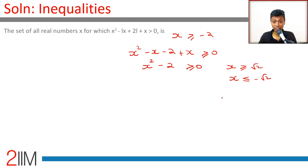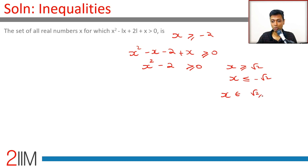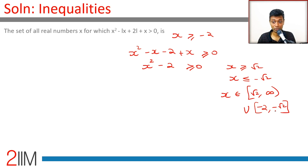But remember, this is valid only when x is greater than or equal to minus 2. So intersecting with the constraint x ≥ -2, we get x belongs to [√2, ∞) union [-2, -√2]. It cannot go below minus 2, so we keep that in mind.